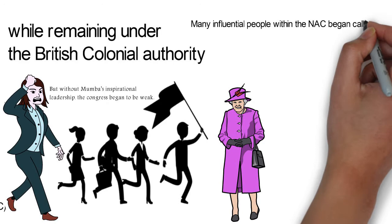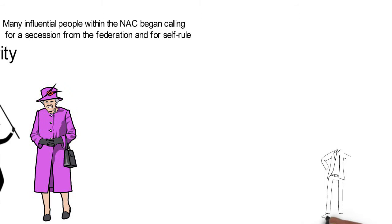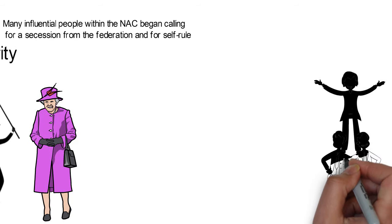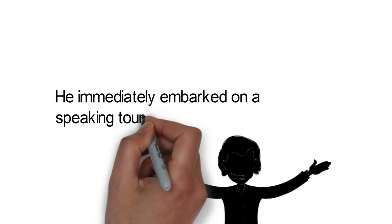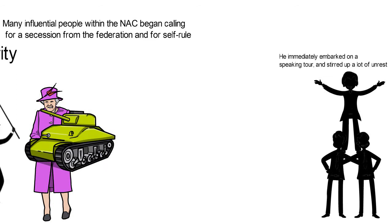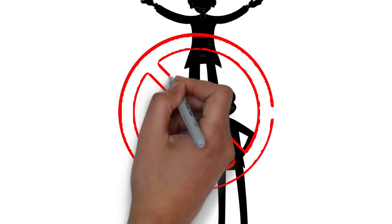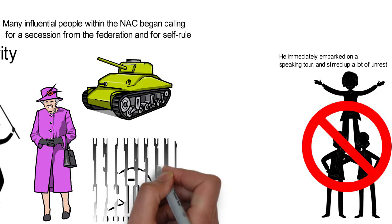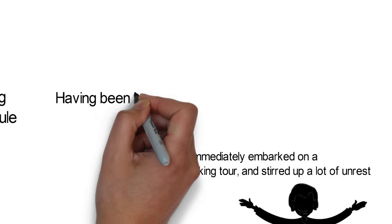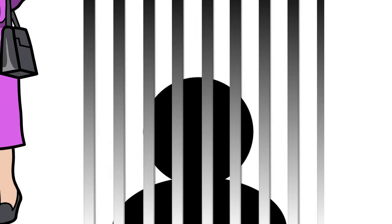Many influential people within the NAC began calling for a secession from the Federation and for self-rule. By July 1958, Hastings Banda, who had been in Ghana, returned and took up the leadership of the NAC. He immediately embarked on a speaking tour and stirred up a lot of unrest. By February 1959, the unrest had become serious enough that troops were flown in to help keep order. Subsequently, a state of emergency was declared and the NAC was banned. The following month, on the 3rd of March, Banda, along with several other Africans, was arrested. Having been banned, the NAC was succeeded by the Malawi Congress Party, led from prison by Hastings Banda.